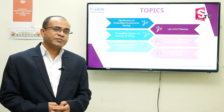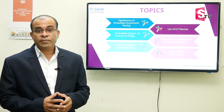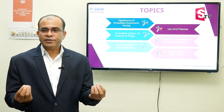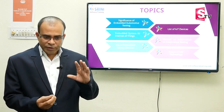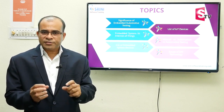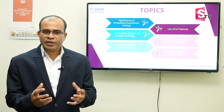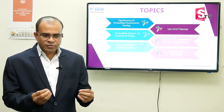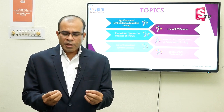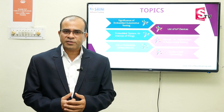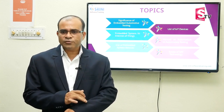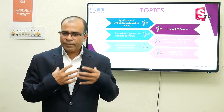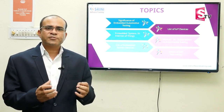An embedded system device example: in the bike, there are LED blue lights. Whenever you press the brake, certain lights automatically become visible to give a message and highlight the device to other people. Another example: wearable devices. With a smart watch, we can measure BP, sugar, heartbeat, and blood pressure. These are all embedded system devices.